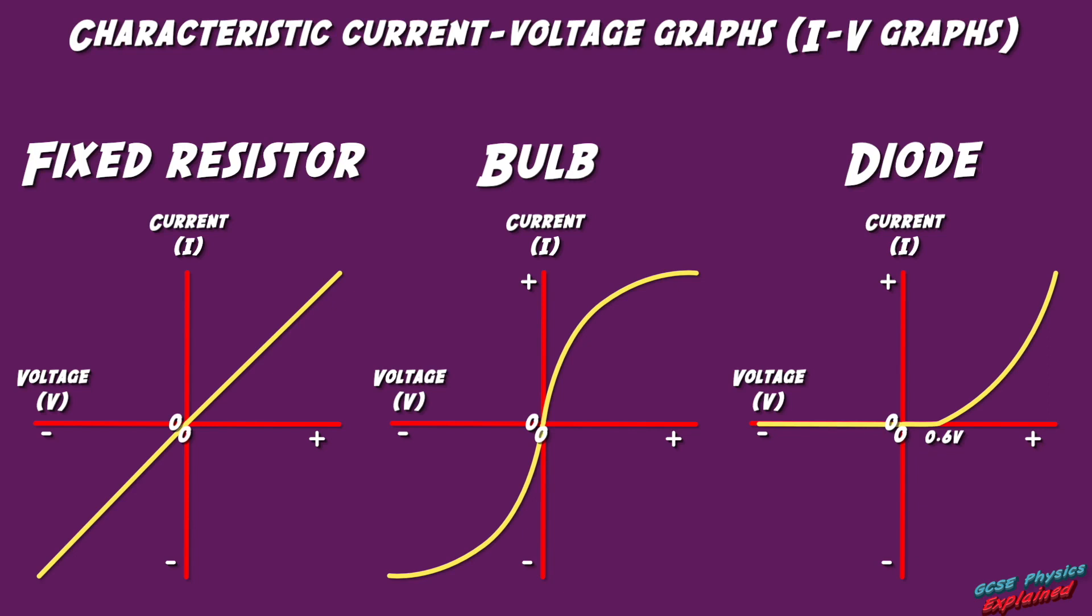I like my students to understand why the shape is the way it is because then they can understand more about the actual component. Let me explain some general information about current voltage graphs first, then I can use that basic understanding to explain the three graphs.